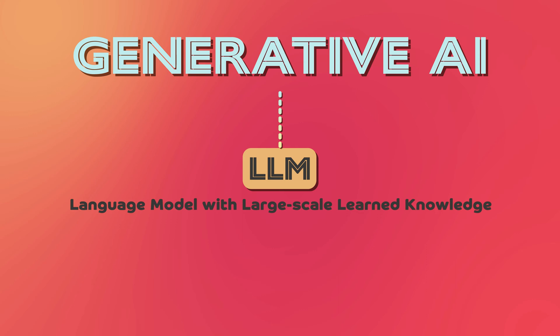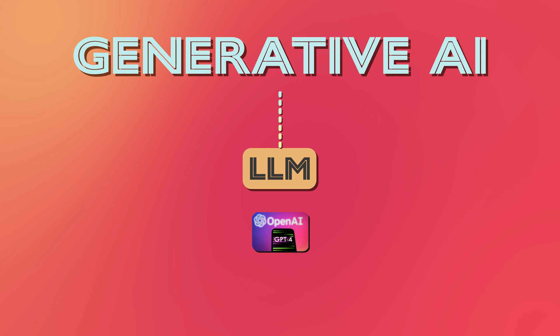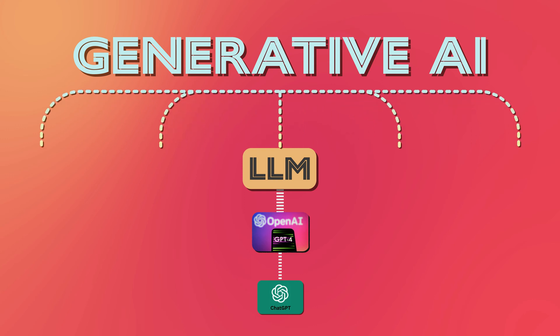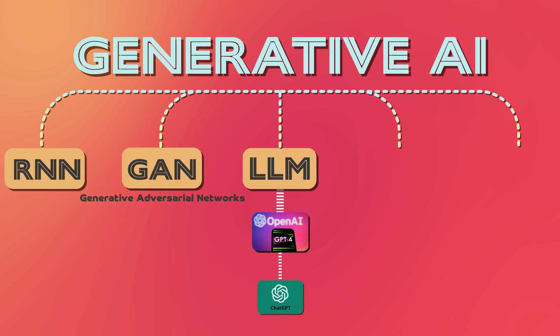LLM stands for Language Model with large-scale learned knowledge. LLM is a type of generative AI designed to understand and generate human language. OpenAI's GPT-4 and its cousin ChatGPT are LLMs and are often grouped with similar technologies under the umbrella term generative AI. Other common forms of generative AI include RNNs (recurrent neural networks), GANs (generative adversarial networks), and transformers.